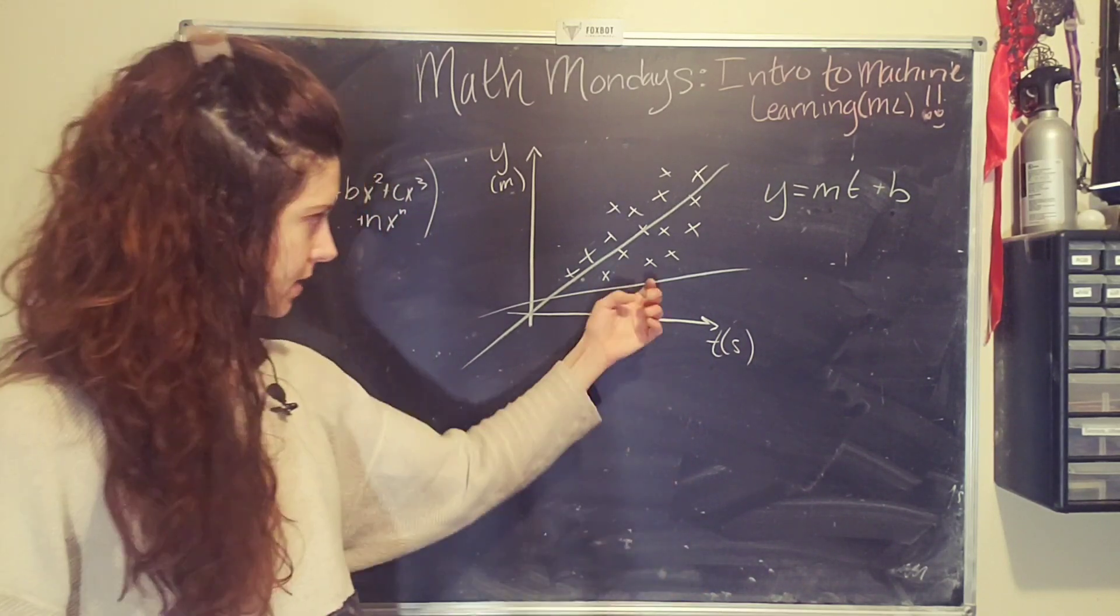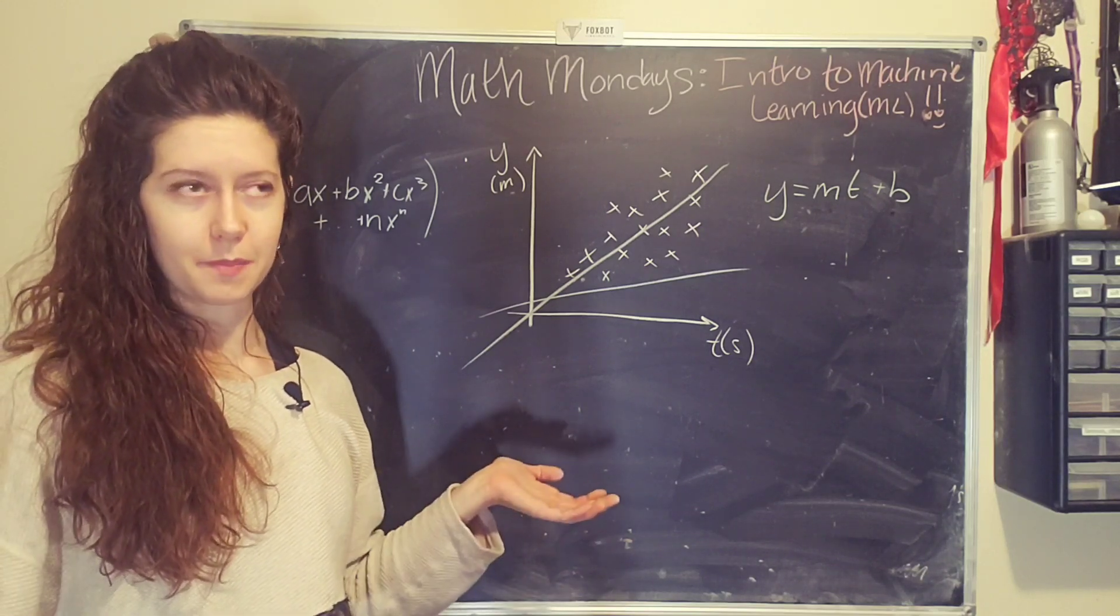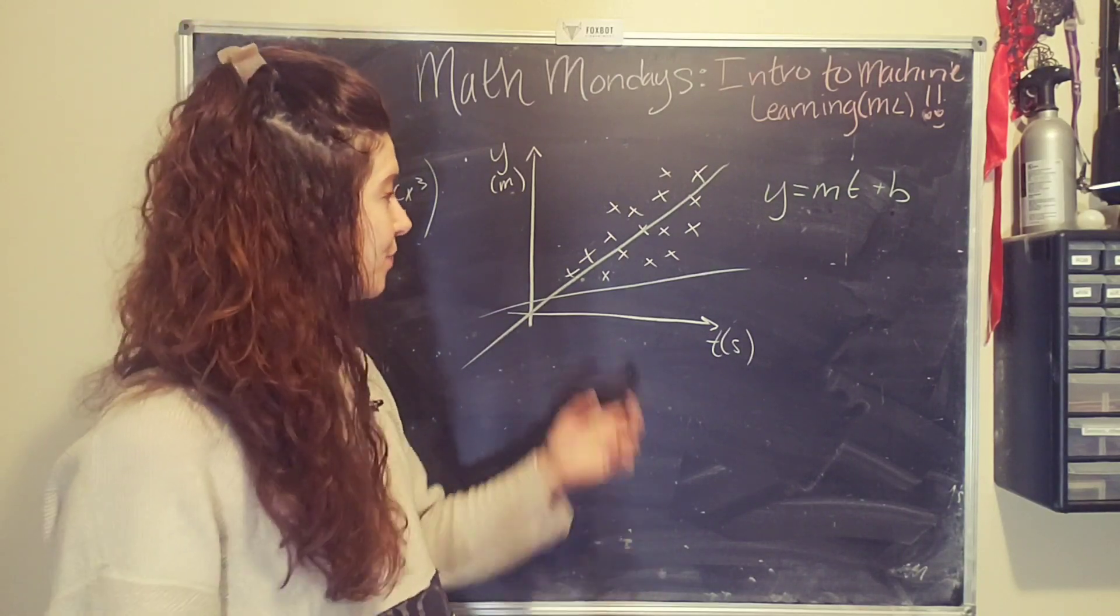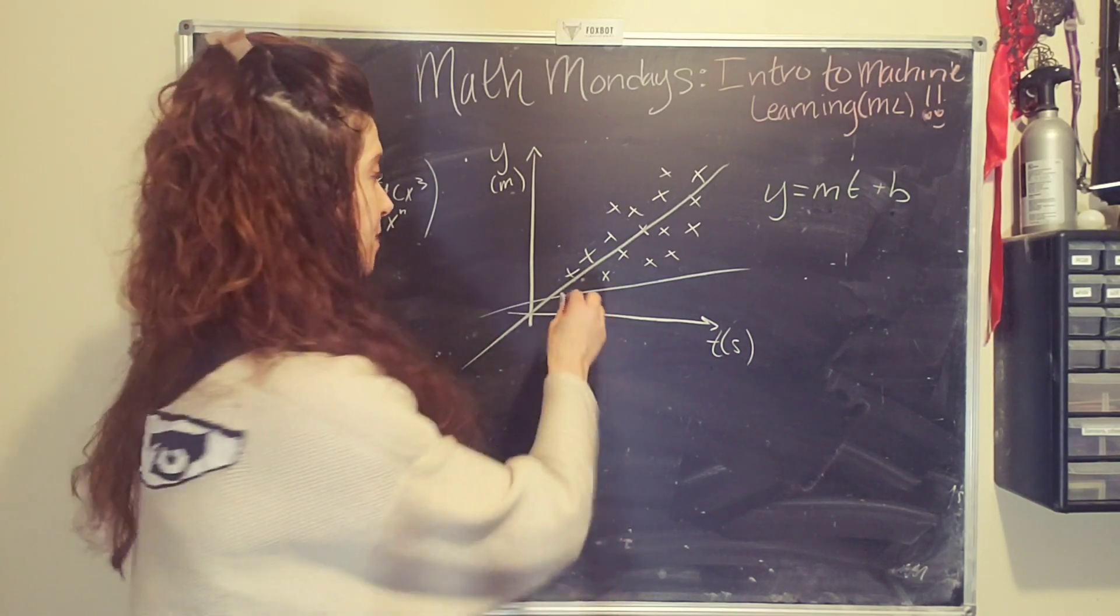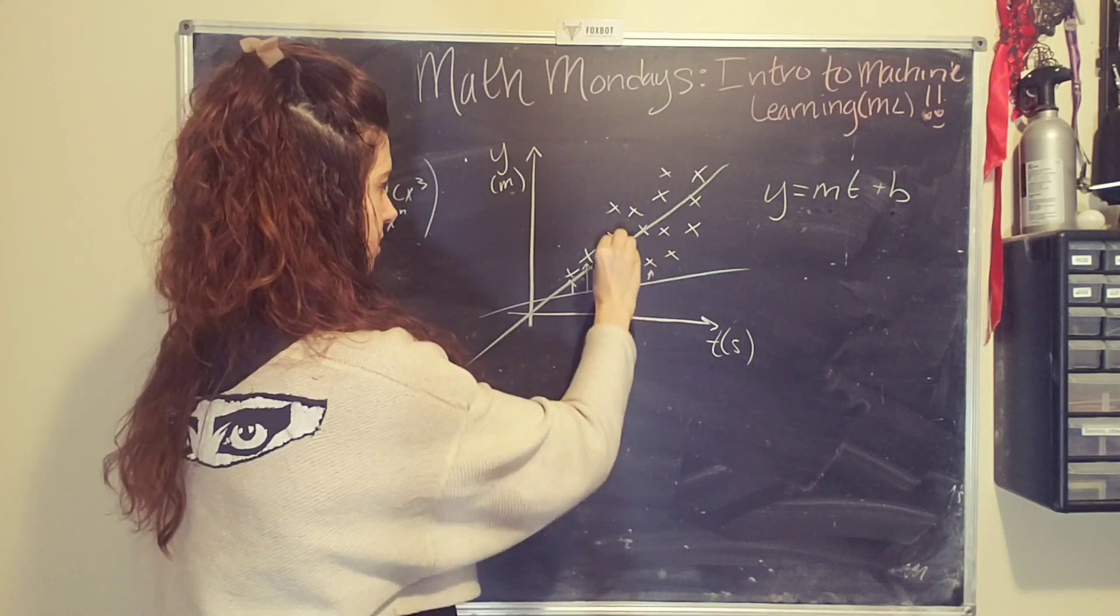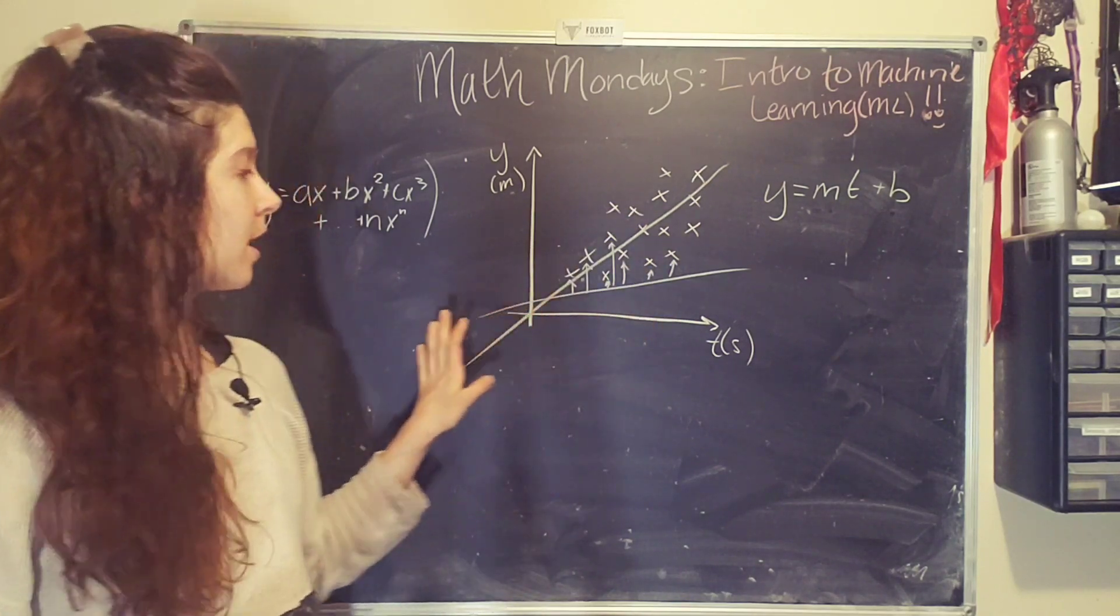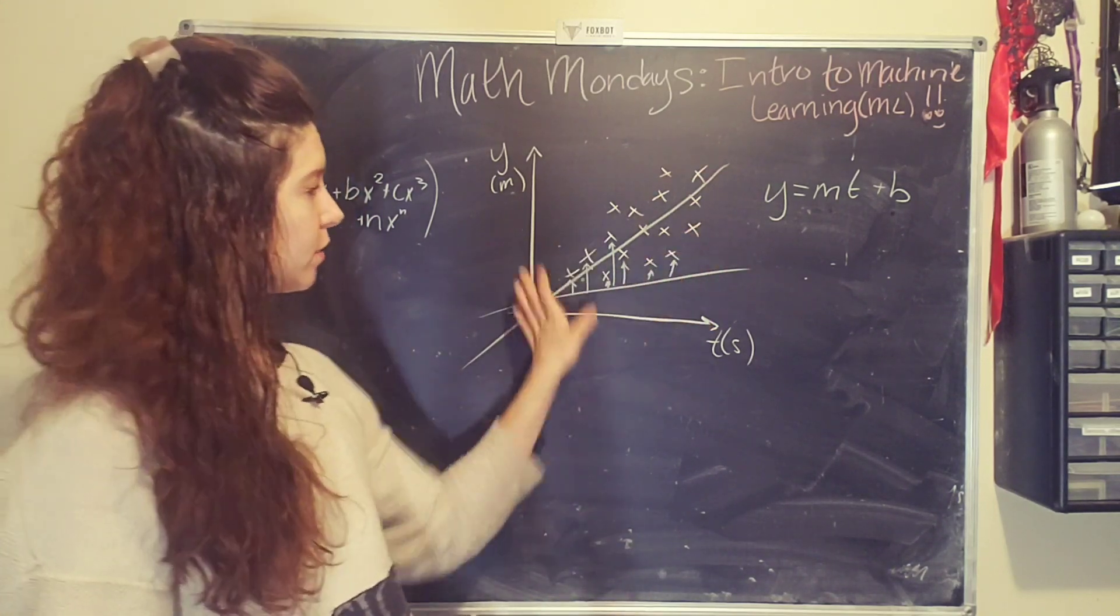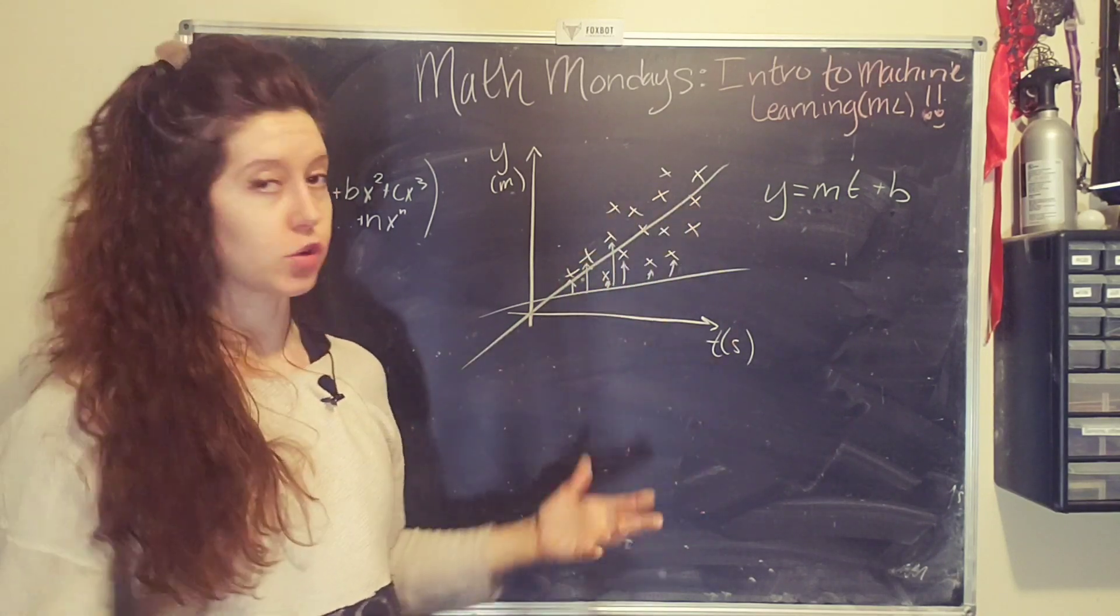So now what do we do? We're like, that's not accurate. I want a better line. Your program is like, I don't know how to draw a better line. So you have to give it some instructions on how to do that. So how do we actually do that? Well, hey, what we can do is measure the distances to all of the data points, add up those distances, and then kind of divide by the number of data points to get something like an average for how far away each of the data points are.